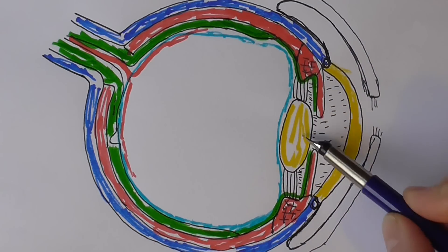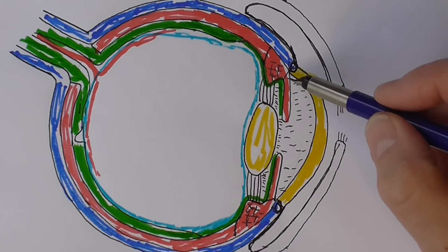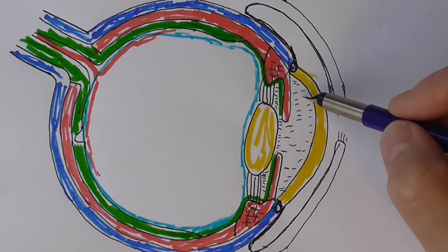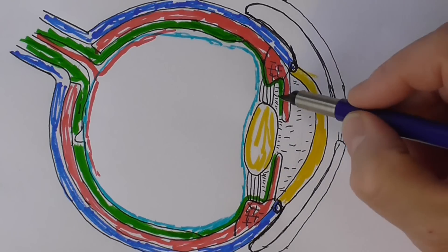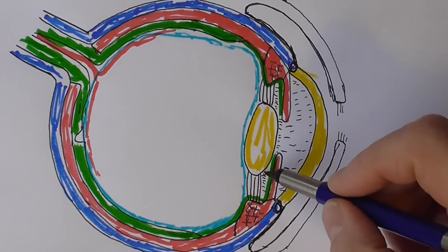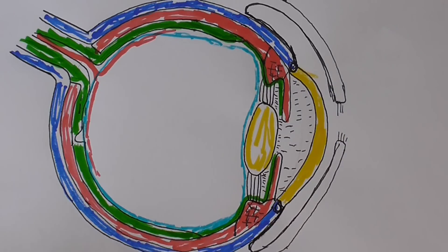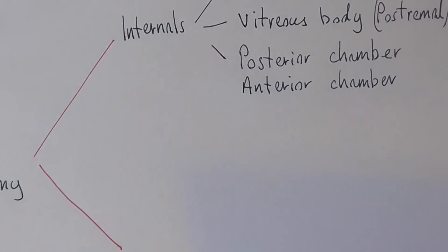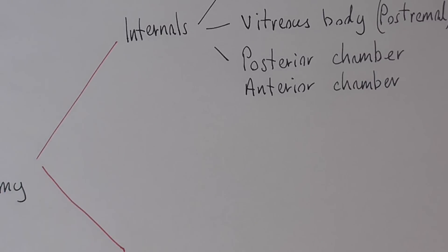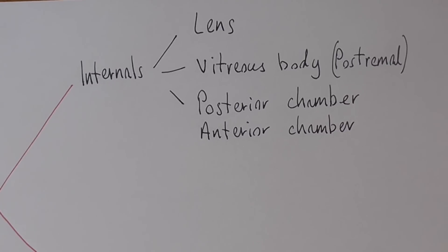This is the lens in yellow. The anterior and posterior chambers refer to being in front of and behind the iris. So the posterior chamber is here and the anterior chamber is here, but we notice that they're both filled with the aqueous humour. So those are the internal structures.